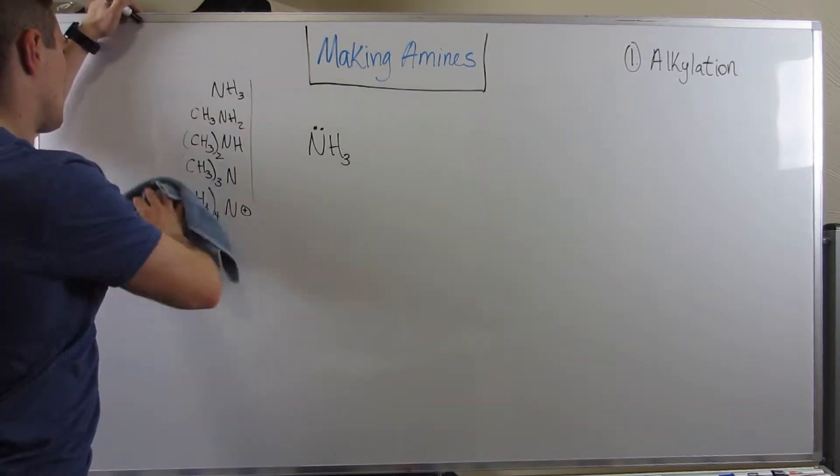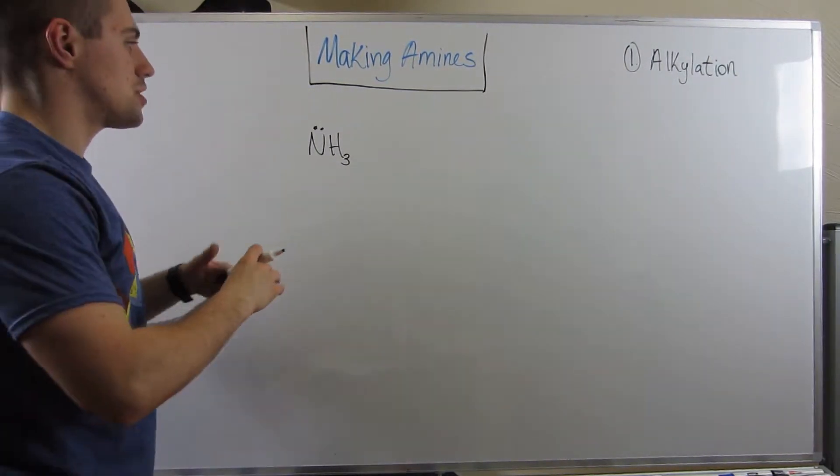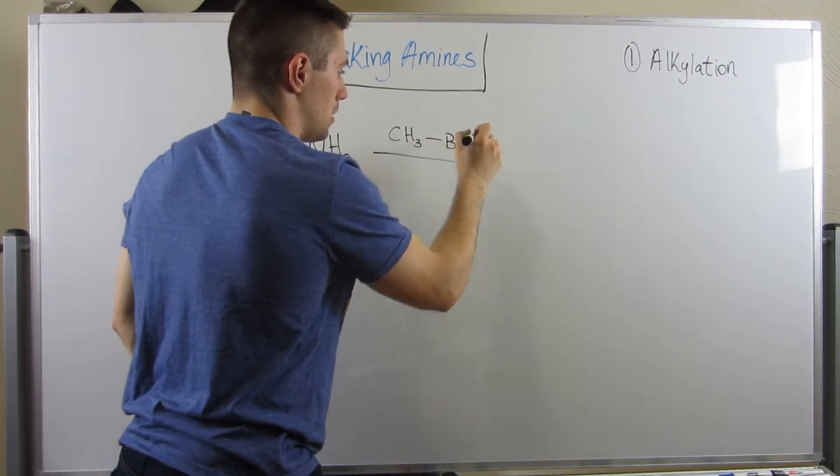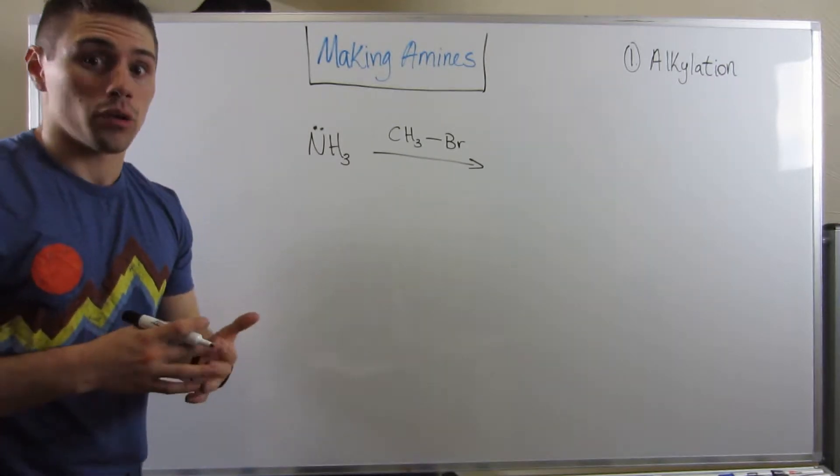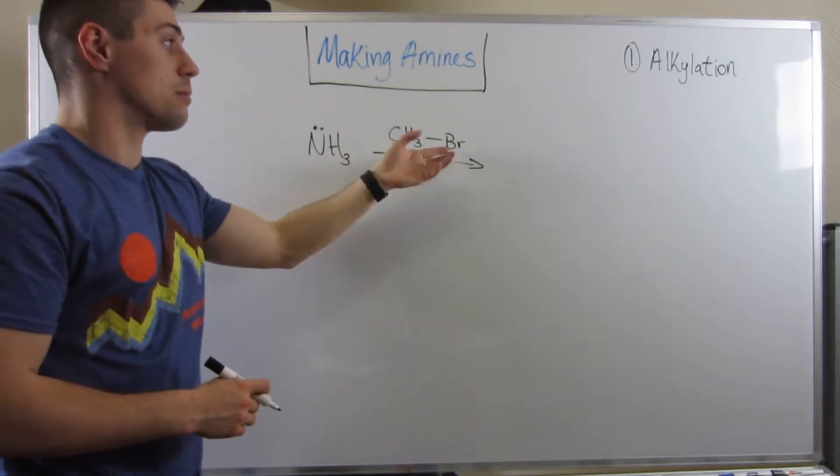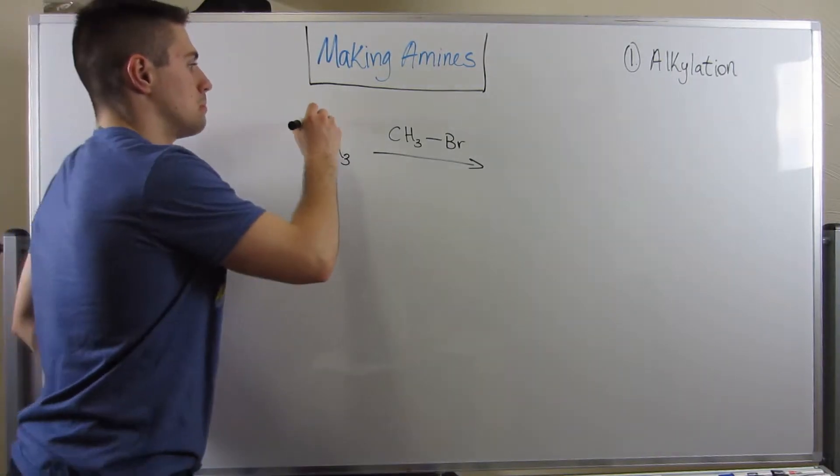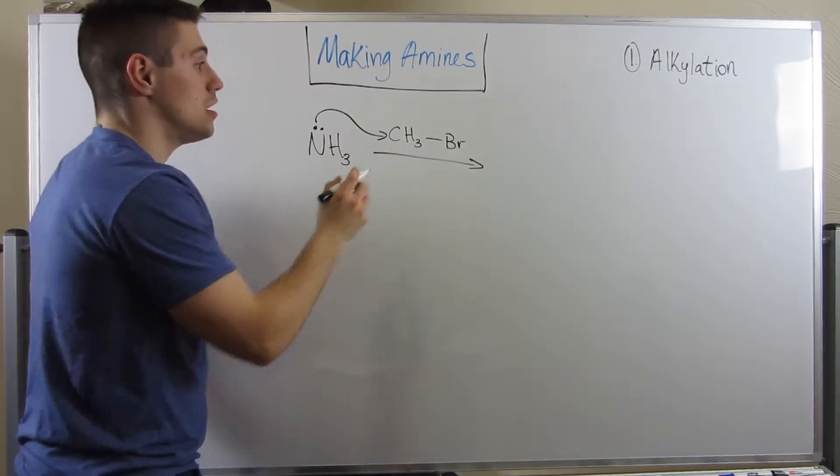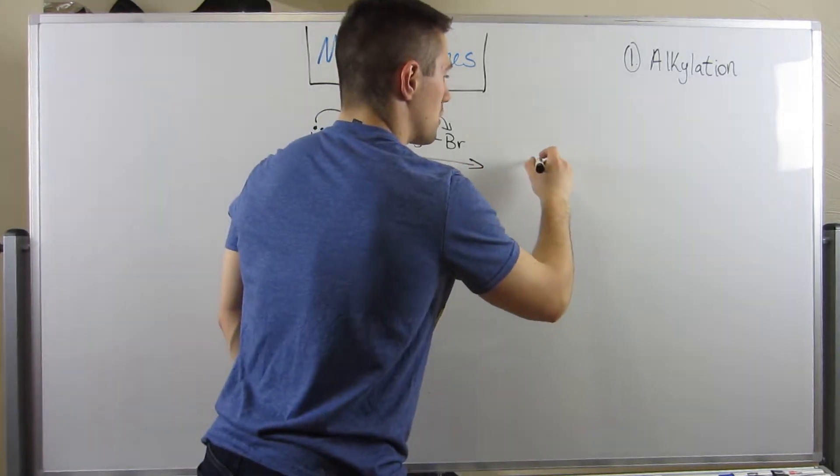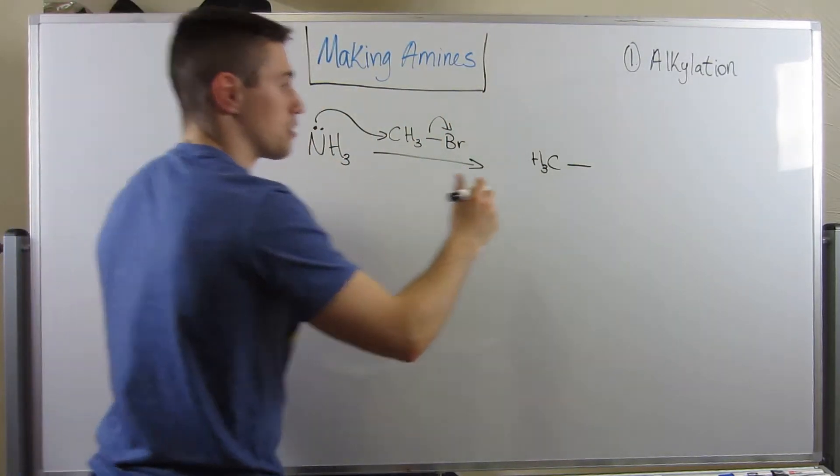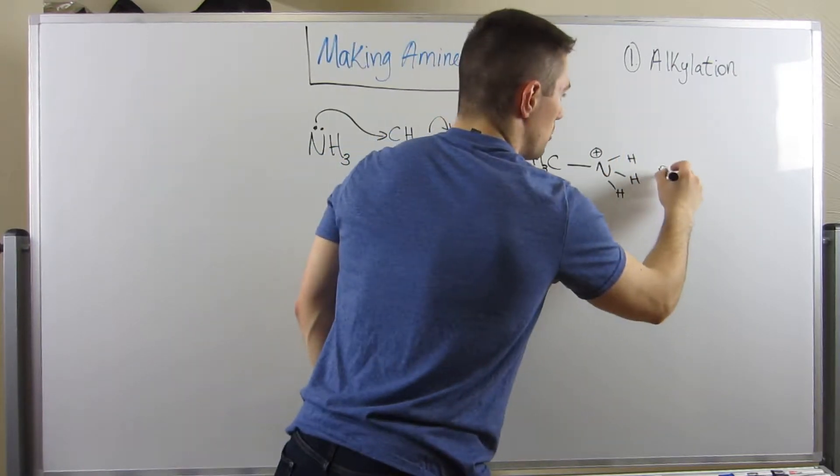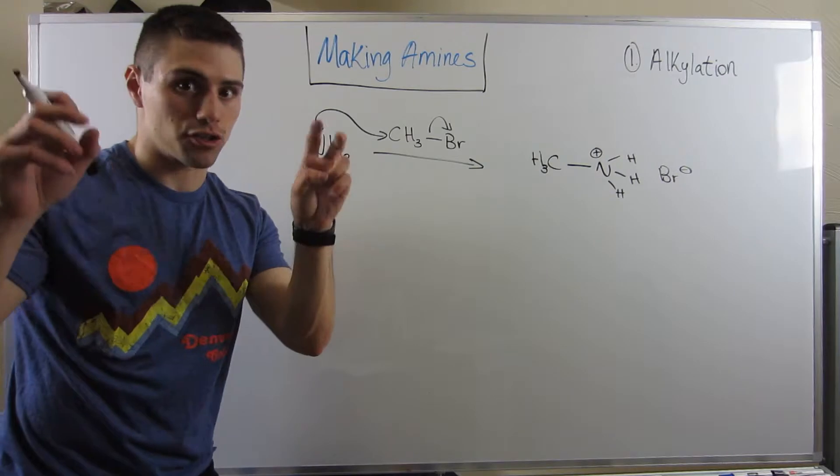If this was confusing, I'm going to show you this mechanistically. Let's say we have ammonia and I give you a reaction arrow and CH3Br. If I gave you this in OChem 1, your thought process would go like this: this is a methyl substrate, Br would be a good leaving group, let's do SN2. Attack the partially positive carbon, backside attack, dump the electrons on bromine.